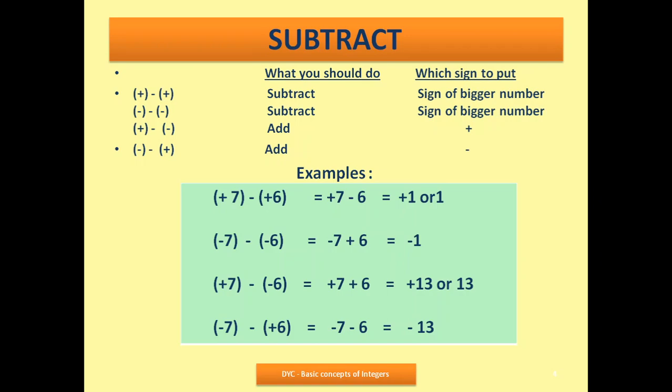First subtraction example: plus 7 minus bracket plus 6. There are two signs — minus and plus. Multiply them: minus times plus is minus. So it becomes 7 minus 6, which is 1. Take the sign of the bigger number — 7 is positive, so the answer is positive 1. Next: minus 7 minus minus 6. Minus times minus is plus, so it becomes minus 7 plus 6. Subtract: 7 minus 6 is 1, and the bigger number is 7 with a minus sign, so the answer is minus 1.